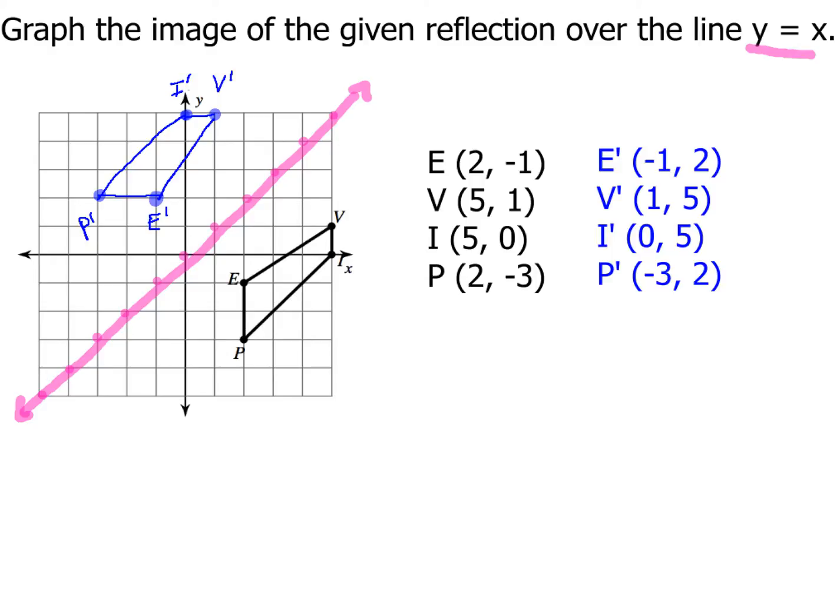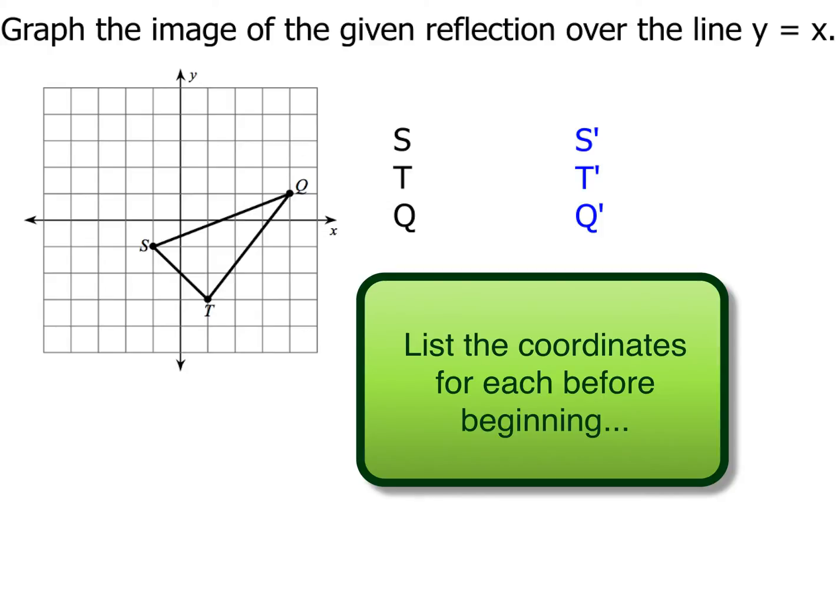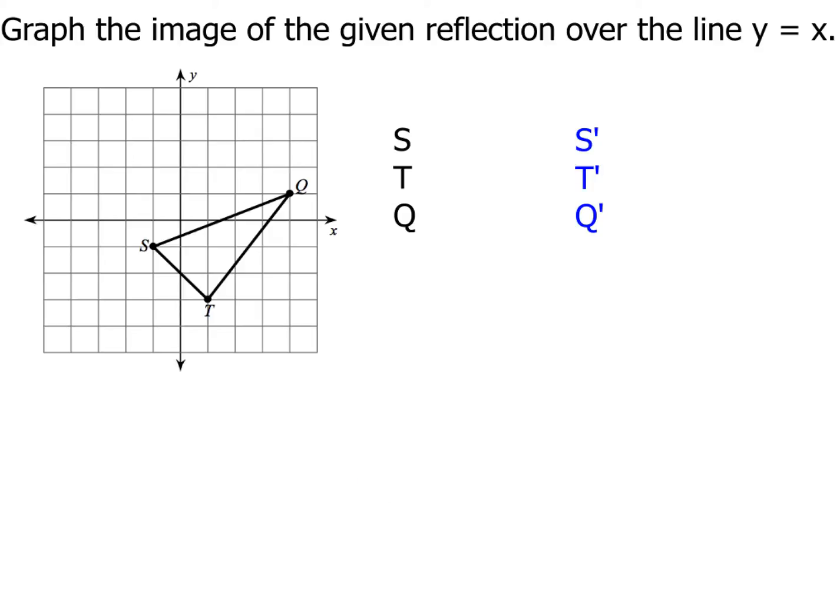Now let's take a look at one other example. Same thing. Here's triangle stq. Now I don't want you to get hung up so much on the picture right now. What I want you to do is just go ahead and list the coordinates for s, then t, then q. Then list the coordinates for s prime, t prime, and q prime.